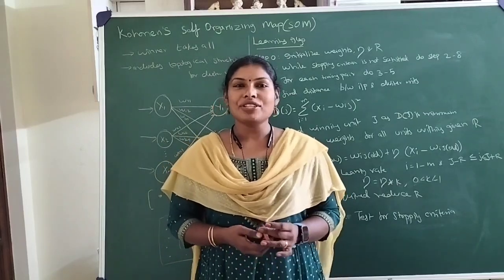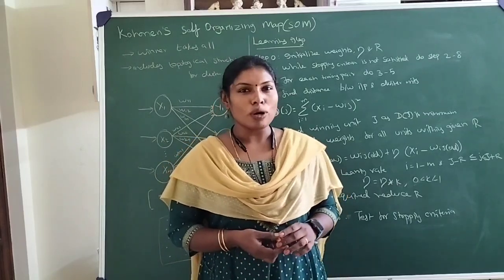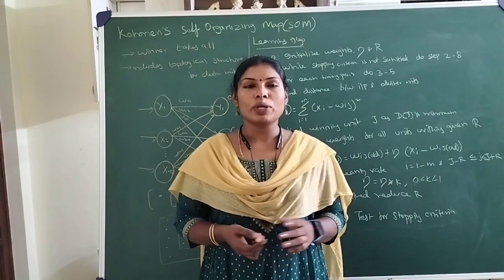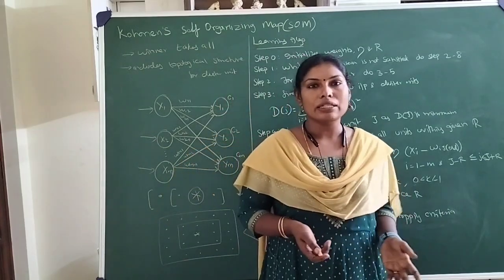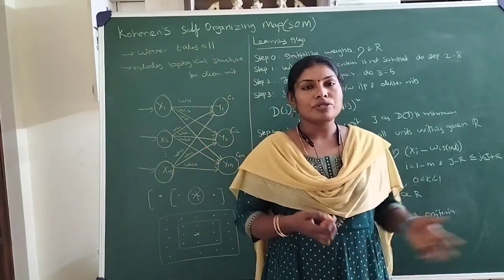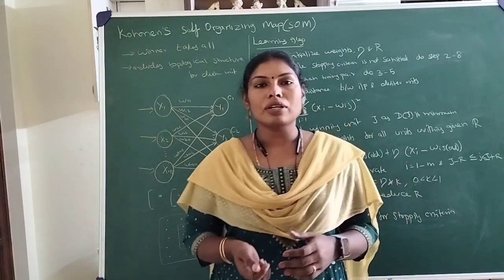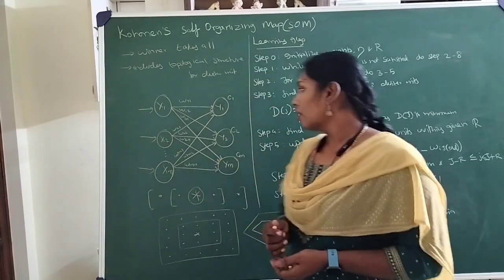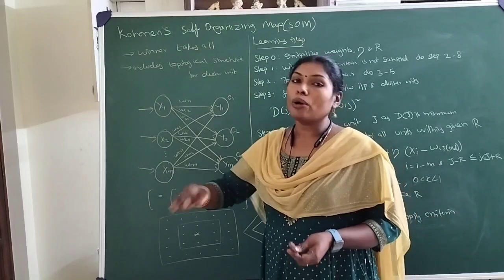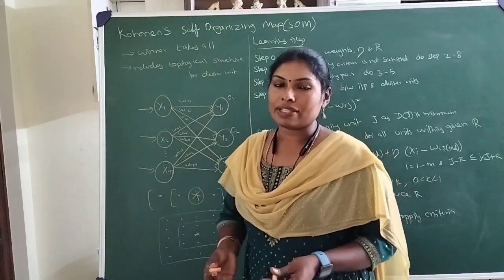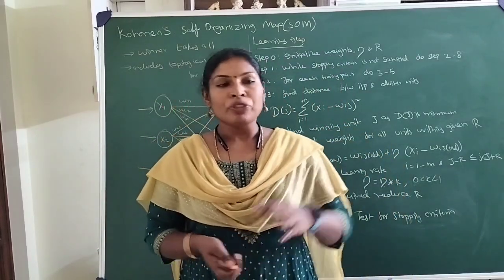Hello everyone. In today's session we are going to discuss about the Kohonen self-organizing map. It is a neural network model that follows an unsupervised learning structure. It follows a competitive neural network structure where you will have a lot of input pairs without any targets given — that's why we call it unsupervised learning.